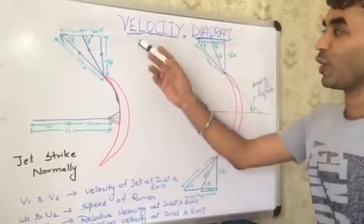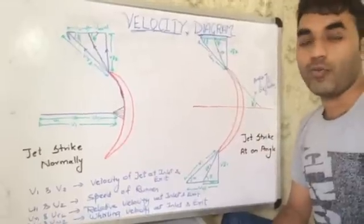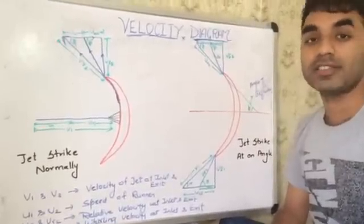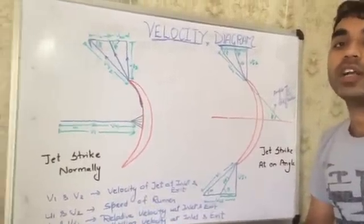Hello friends! Today we are here on the topic Velocity Diagram. Whenever the jet is coming and strikes with the runner, it produces a different velocity.